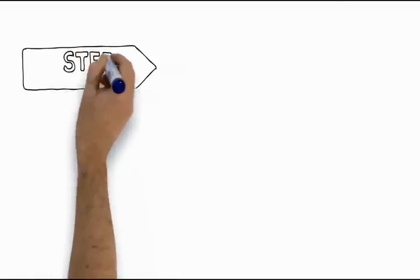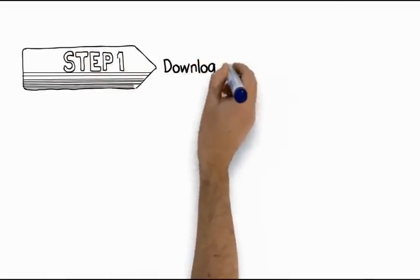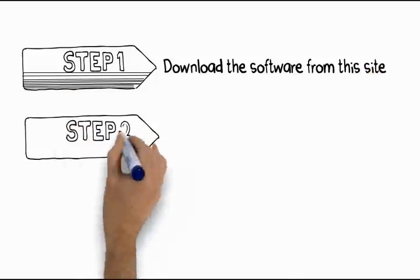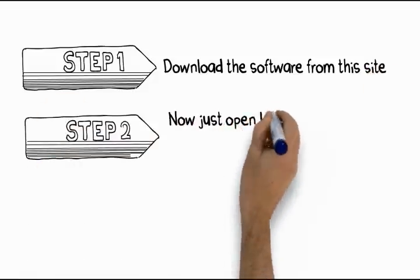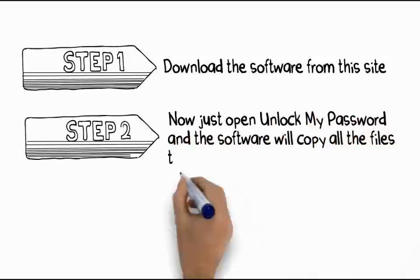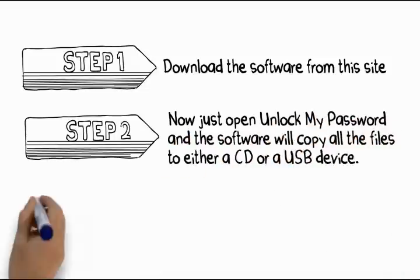Here are the three simple steps. Step 1: Download the software from the site. Step 2: Now, just open Unlock My Password and the software will copy all the files to either a CD or a USB device.